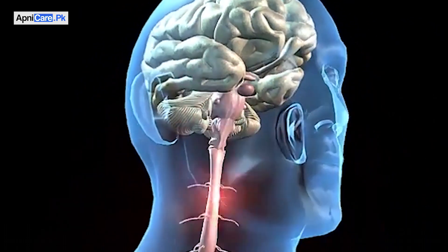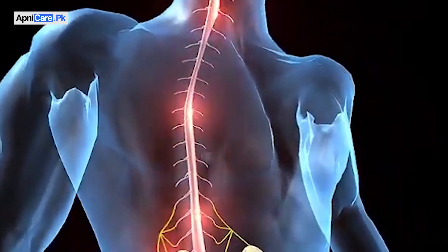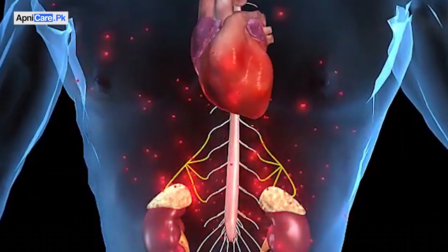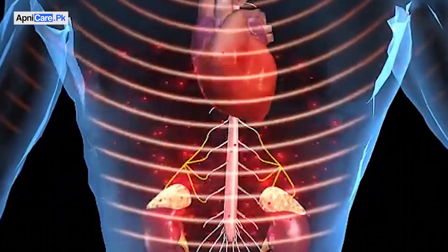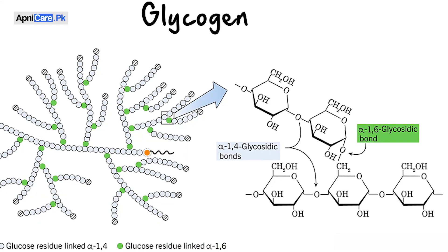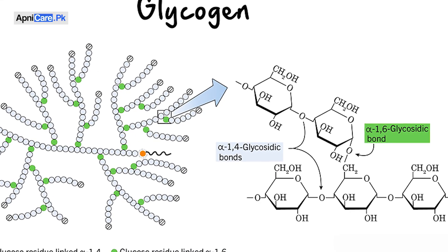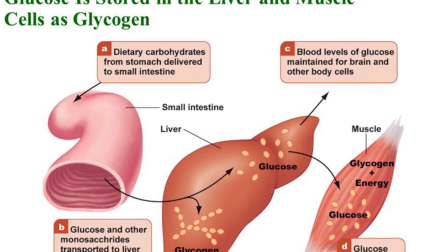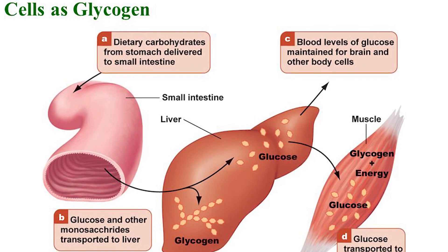When we increase cortisol in our body — when we get a lot of stress — cortisol increases. Its role is to store glucose in our liver, which is called glycogen, a form of glucose stored in the liver for times when we don't have glucose. When we don't have glucose, it releases glucose into our blood.